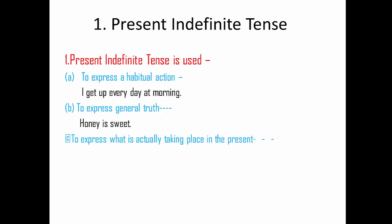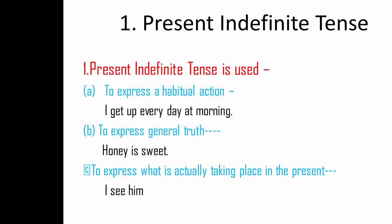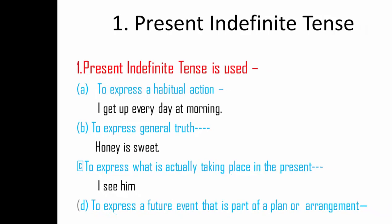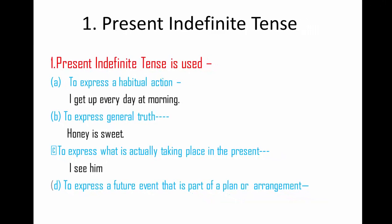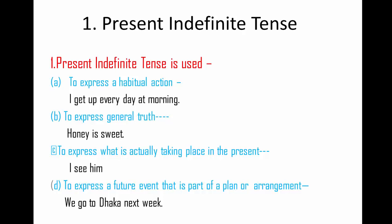C, to express what is actually taking place in the present. For example: 'I see him.' 'I go to Dhaka.' 'They help me.' D, to express a future event that is part of a plan or arrangement. For example: 'We go to Dhaka next.' It is part of the present but will happen in the future — this is also called present indefinite tense.